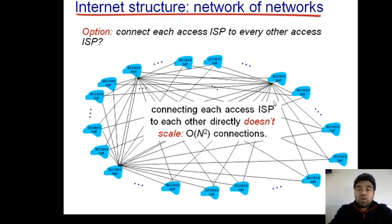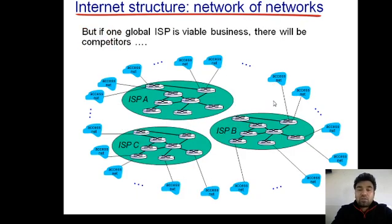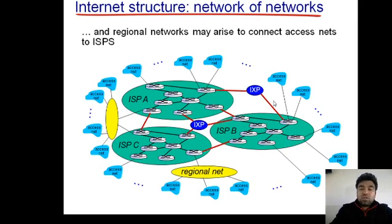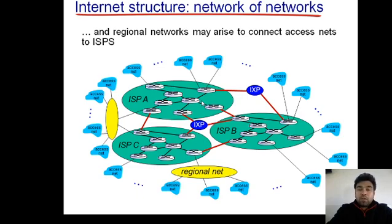In this ISP hierarchy we have tier 3, tier 2, and tier 1 internet service providers. Tier 3 ISPs are called access internet service providers. Tier 2 ISPs are the regional internet service providers. Tier 1 ISPs provide international coverage. Tier 1 ISPs are connected with each other in a mesh topology because they are few in number. Access ISPs are either connected with regional ISPs or directly with tier 1 ISPs.